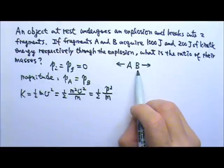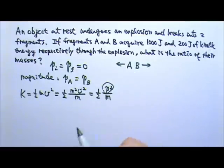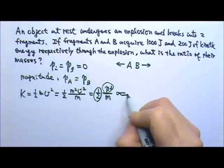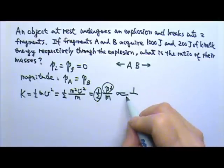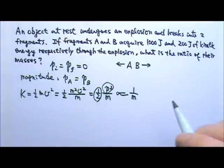Comparing fragments A and B, they have the same momentum and the ½ is constant. Using proportions, the kinetic energy of a fragment is proportional to 1/m.